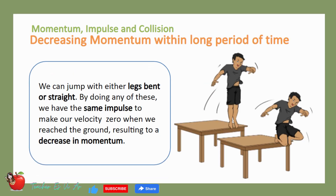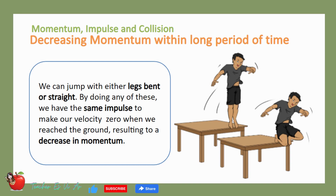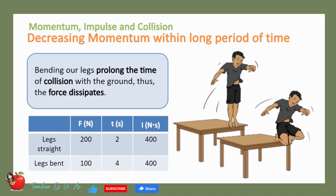Now let us look at the collision of our feet and the ground as we jump from an elevated place. We can jump with either legs bent or straight. By doing either of these, we have the same impulse to make our velocities zero when we reach the ground, resulting in a decrease in momentum. Even though the impulse is the same, we usually jump with bent legs. Bending our legs prolongs the time of collision with the ground, thus the force dissipates.